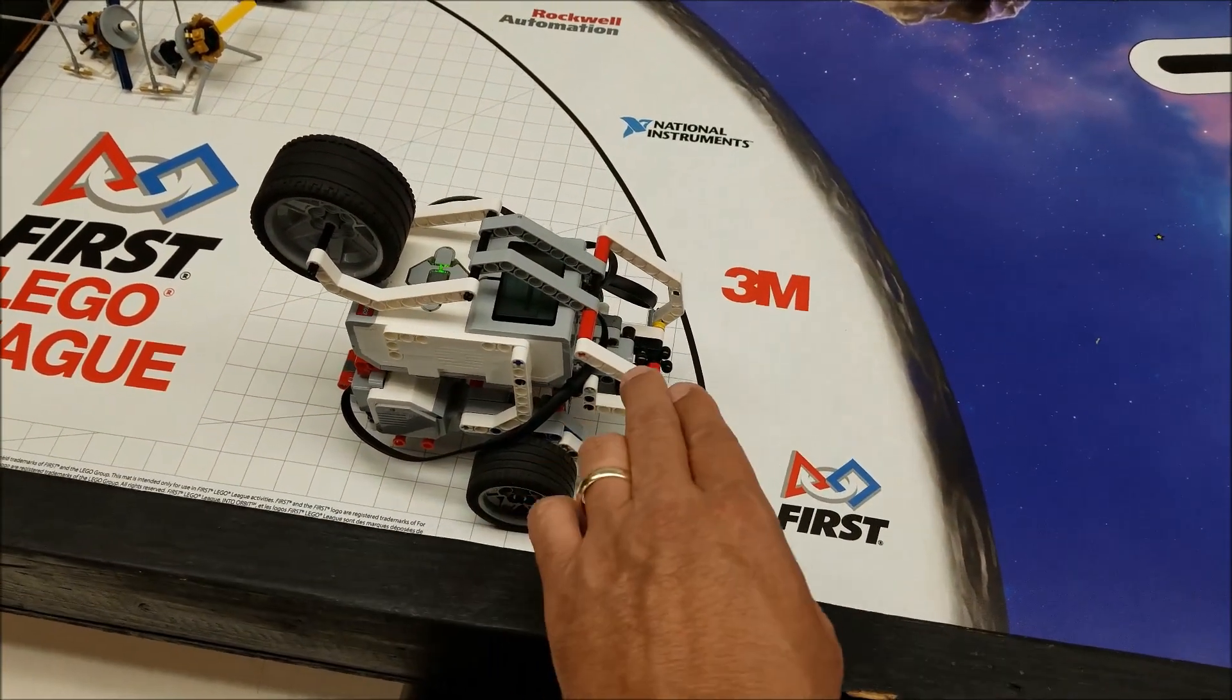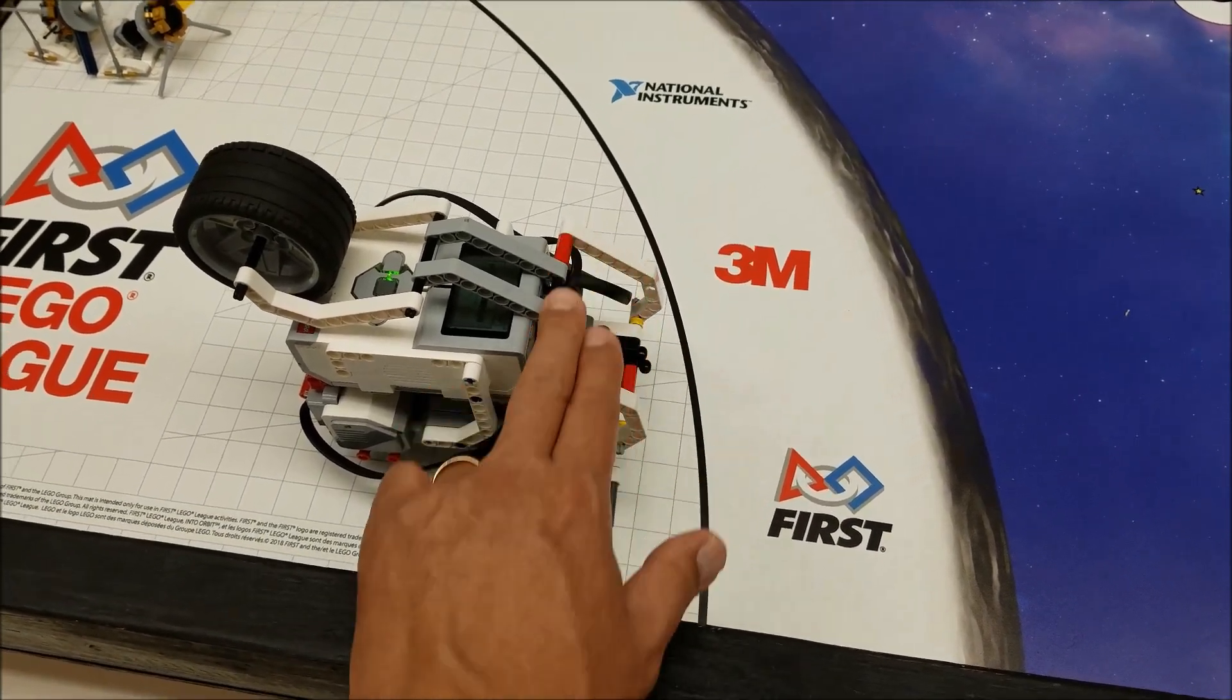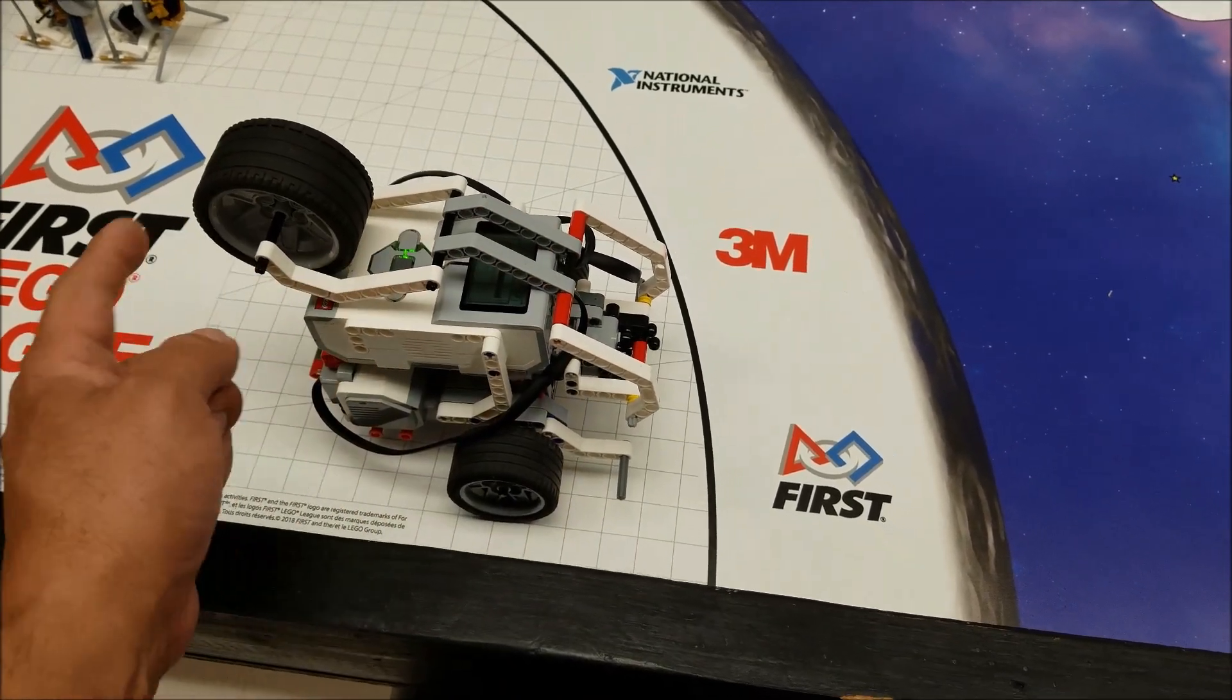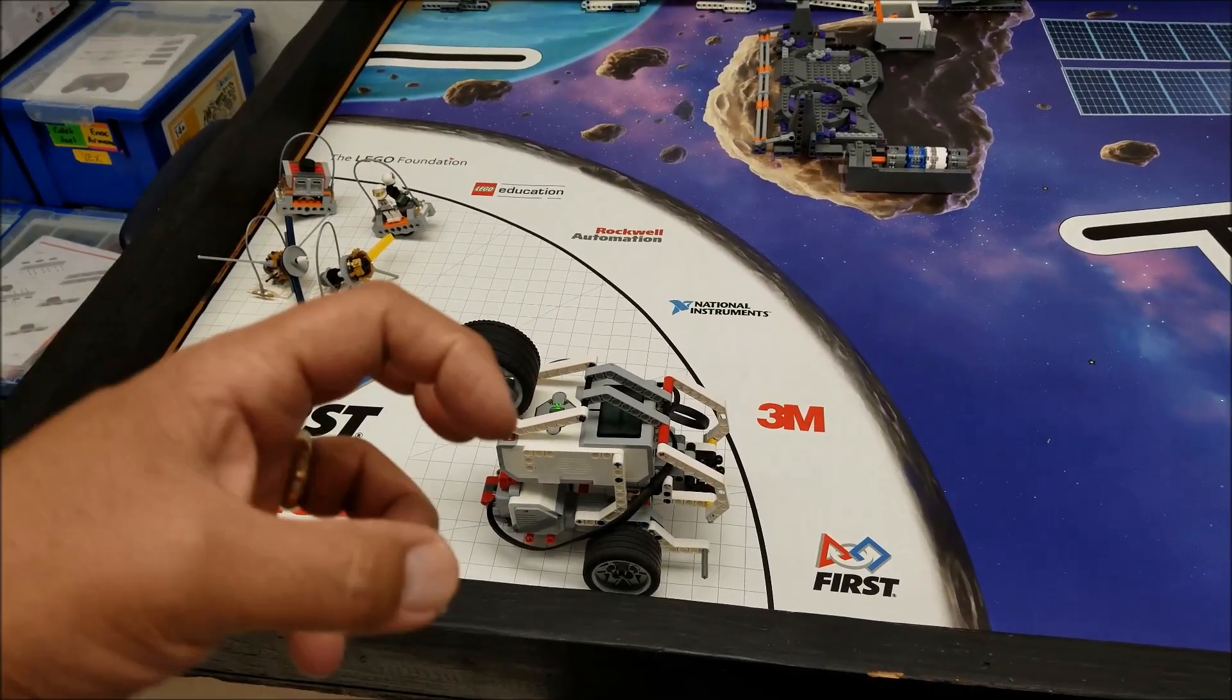All I did was modify the front here attachment. I just made it longer, so it normally would stop here. I just added on to here to give it more weight and give it more leverage to hit this strike pad.